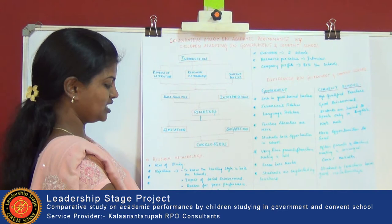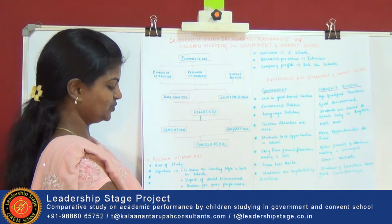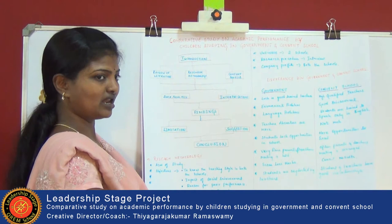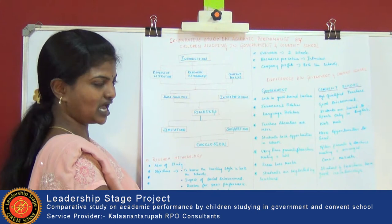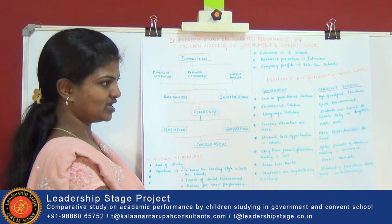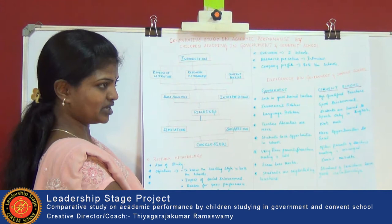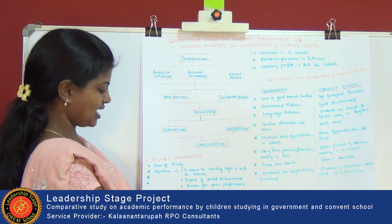Source of data — it's both primary as well as secondary. Primary is a face-to-face interview with the children, and secondary is through books and other authored sources about education. The research design is descriptive, which I have chosen. It's not exploratory — I am not exploring anything new. It's already established that government schools perform low, so I am describing why they perform low in academic performance.